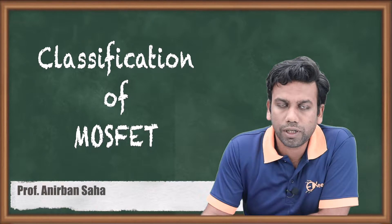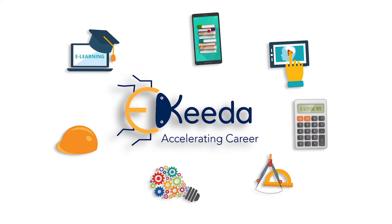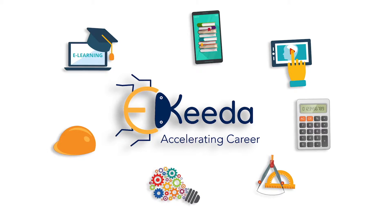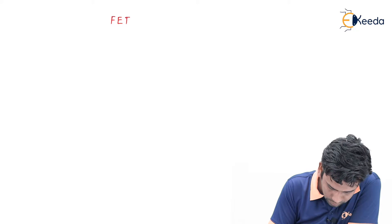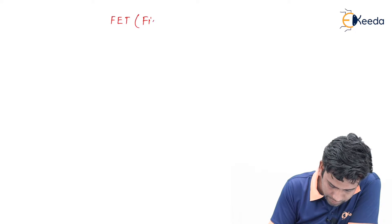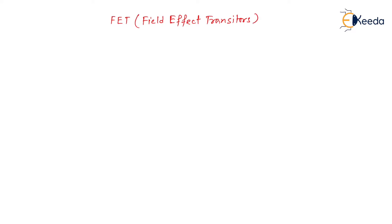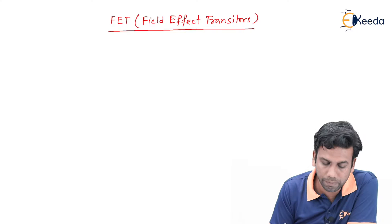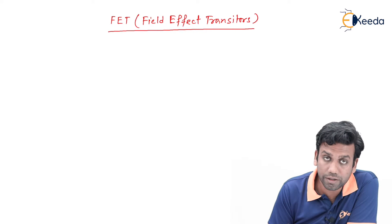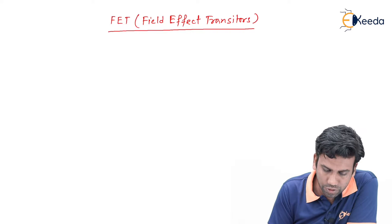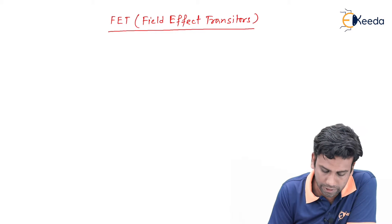Hello friends. In this video we are going to discuss about the classification of MOSFETs. As we know that FET is known as field effect transistor. The name field effect comes from the fact that the characteristics of these devices are controlled by the voltages or fields. That is why they are named as field effect transistors.